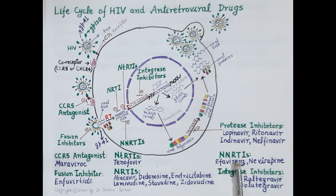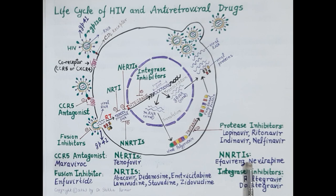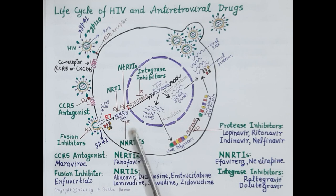The second category of drugs are the non-nucleoside reverse transcriptase inhibitors — NNRTIs. The drugs include efavirenz and nevirapine. These drugs also inhibit the enzyme reverse transcriptase and thereby prevent the formation of proviral DNA.